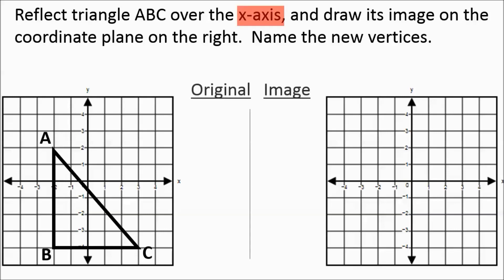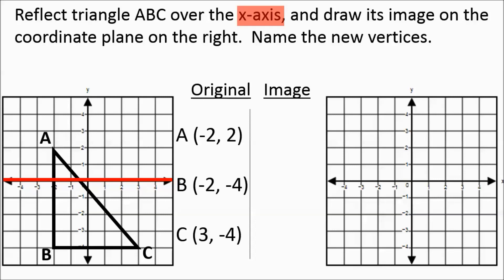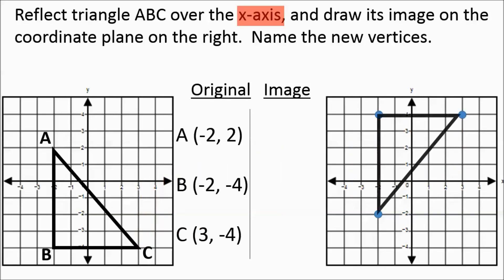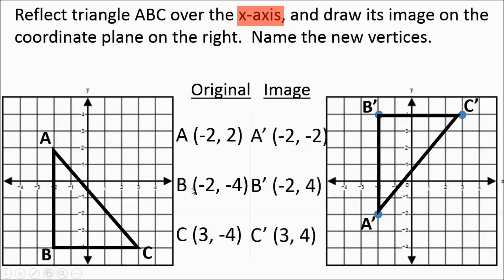We're going to reflect over the x-axis. We name the original points and highlight the x-axis. All points are either above or below the x-axis. Point A was 2 above the negative 2 on the x-axis — now it's going to be 2 below. Point B was 4 below negative 2 — now it's going to be 4 above. Point C was 4 below the 3 on the x-axis — now it's going to be 4 above. Then we connect the points and name them.